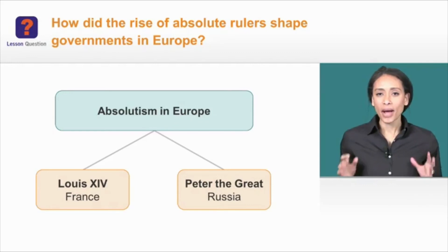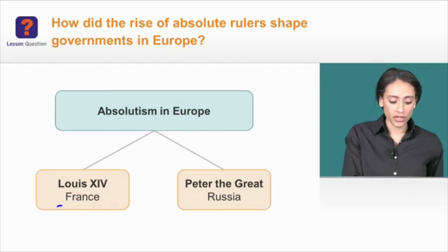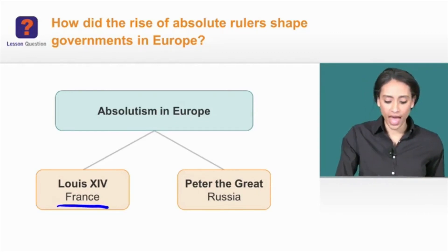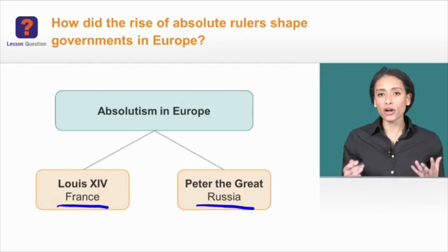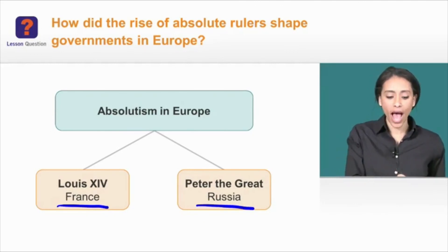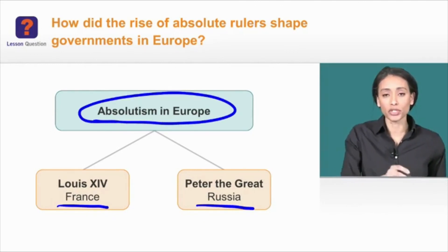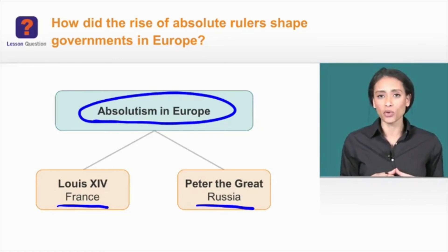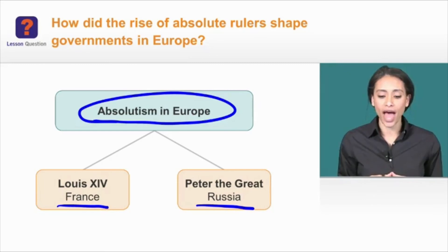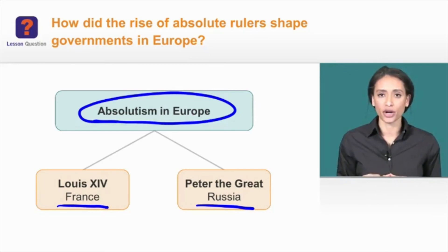By understanding the rule of Louis XIV and Peter the Great, we'll have a better idea of how absolutism in Europe unfolded during the 15 and 1600s. And by the end of today's lesson, we'll be able to answer this question: how did the rise of absolute rulers shape governments in Europe?